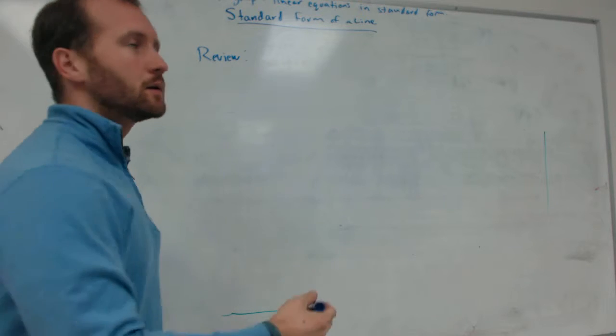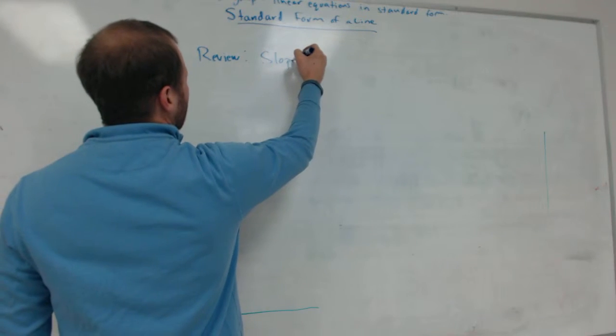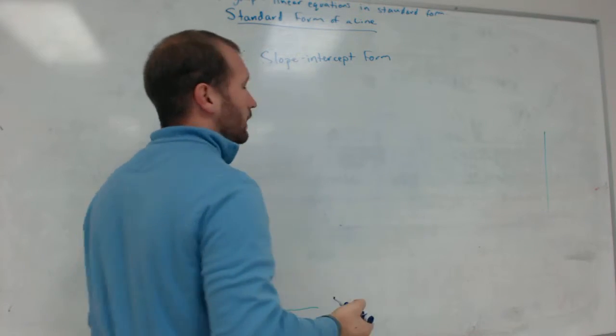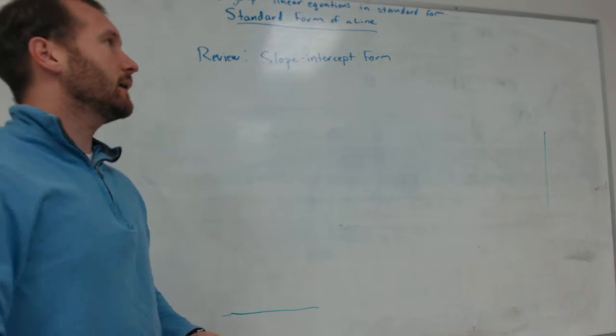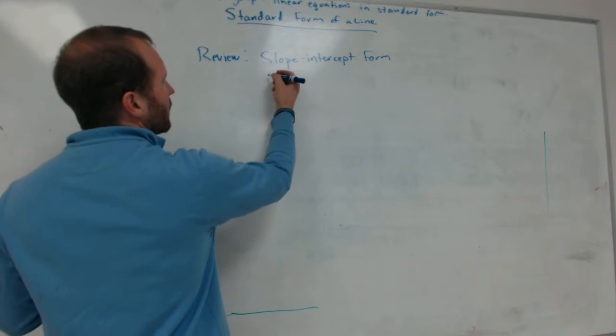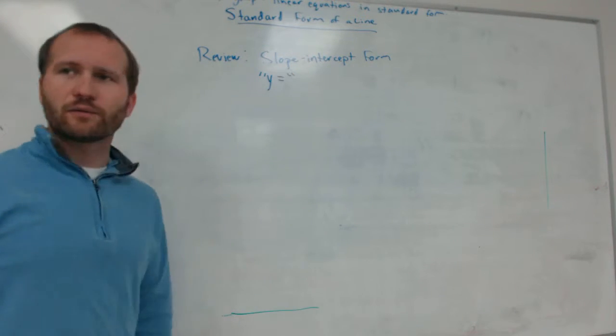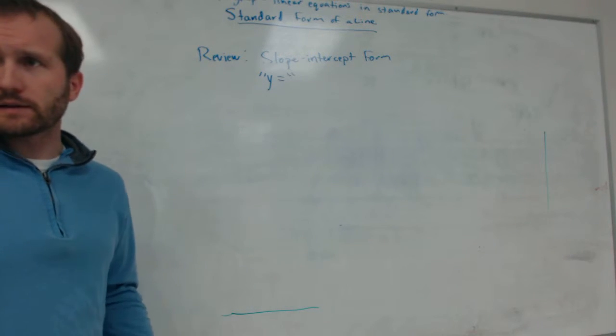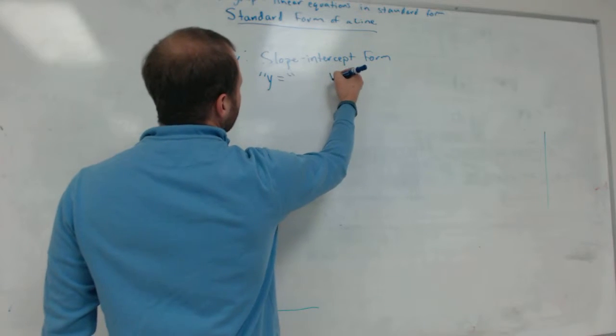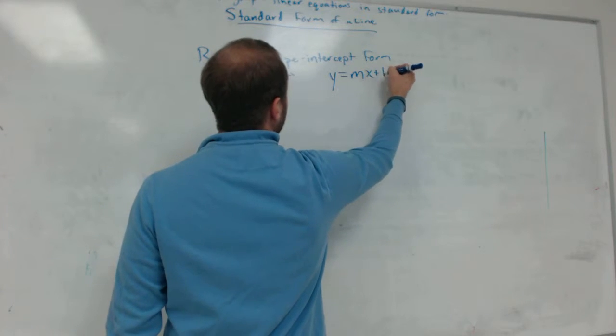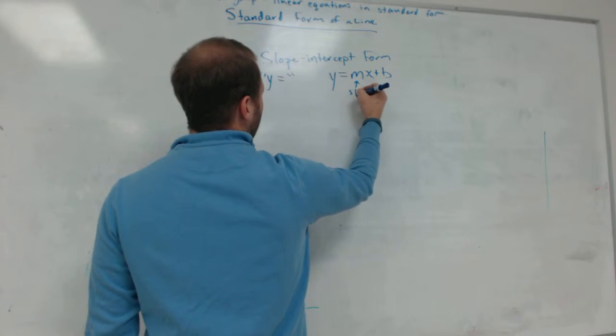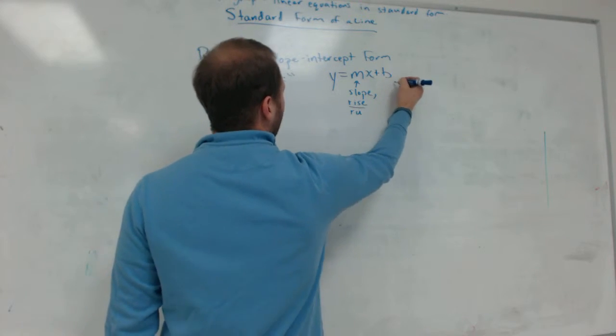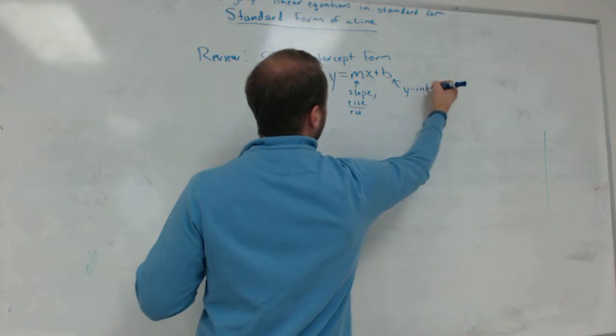Which was called slope-intercept form. The slope-intercept form of a line is also known as the y-equals form of the line. Anything that can be written as y-equals is in slope-intercept form. And the form is y equals mx plus b, where m is your slope, or your rise over run, and b is your y-intercept.